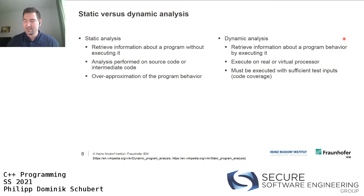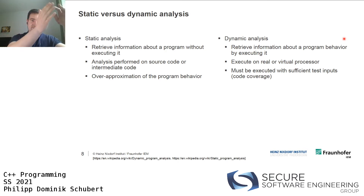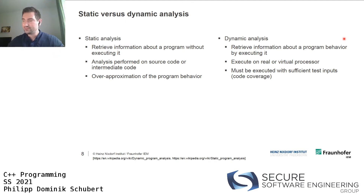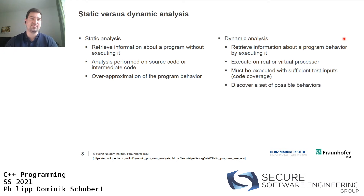Programs analyzed dynamically must be executed with sufficient test inputs to get coverage. Programs typically have branching - ifs, elses, loops - and to figure out the program's properties you want multiple runs with different inputs, ideally executing all possible program paths. If you can't reach all program paths, you miss some behaviors. You only discover a subset of possible paths - you never reach 100% coverage, which is usually pretty much impossible.